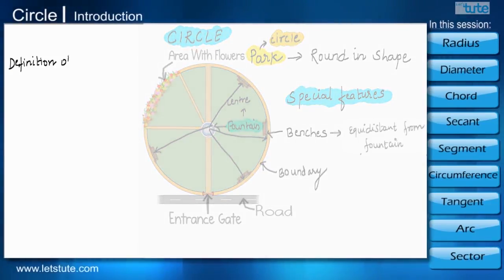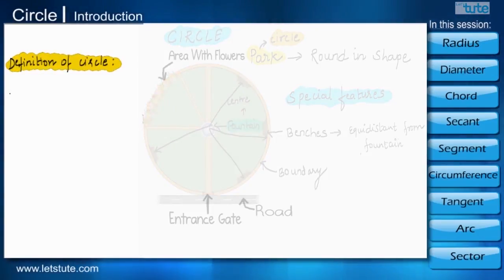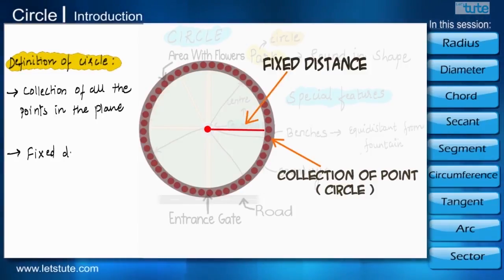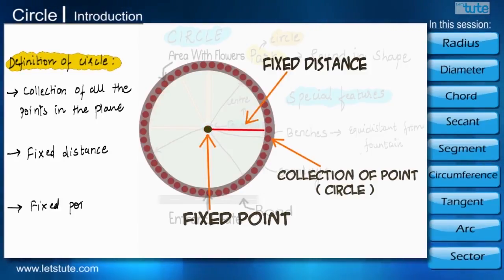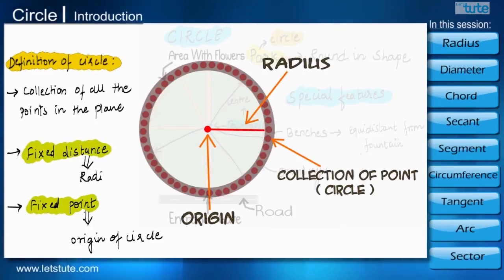Mathematical definition of circle is also on the same lines. A circle can be defined as the collection of all the points in a plane which are at a fixed distance from a fixed point in the plane. The fixed point is called the origin of the circle and the fixed distance is called the radius.